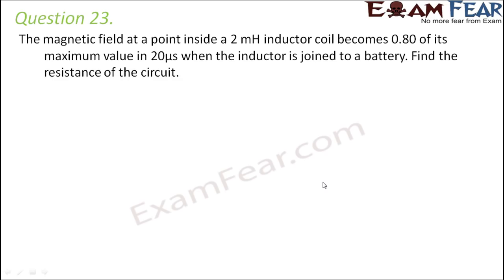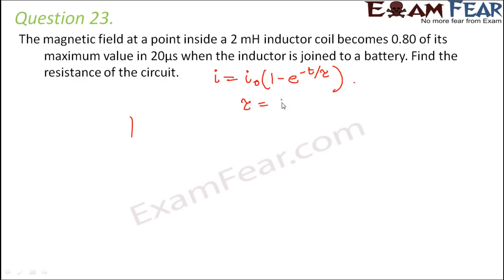Question number 23: The magnetic field inside a 2 mH inductor coil becomes 0.80 of its maximum value in 20 microseconds when joined to a battery. Find the resistance. This involves growth of current: i = i₀(1 − e^(−t/τ)), where τ = L/R, so i = i₀(1 − e^(−tR/L)).